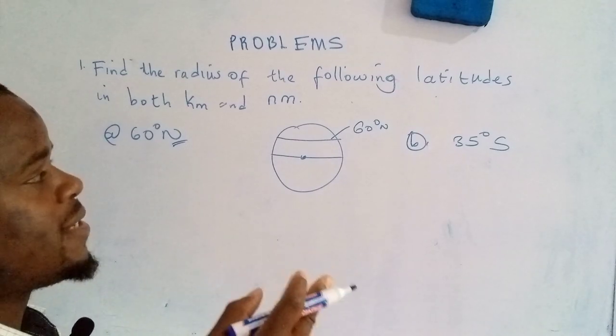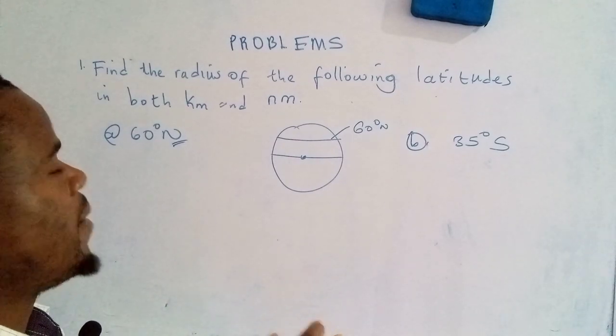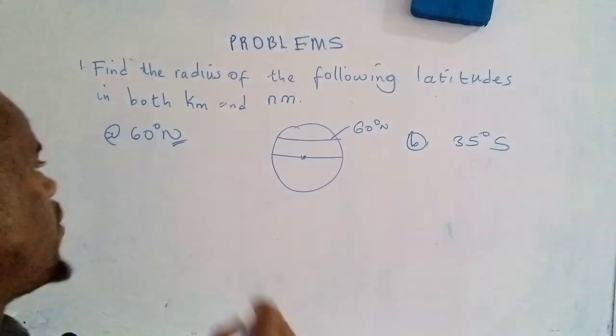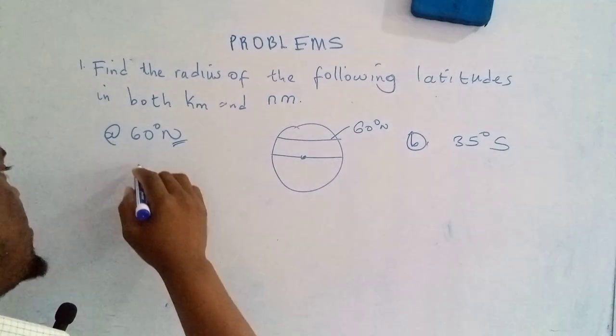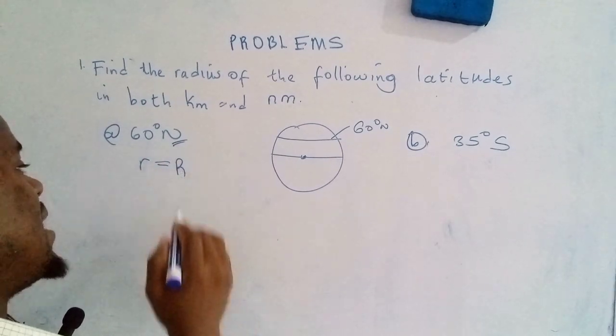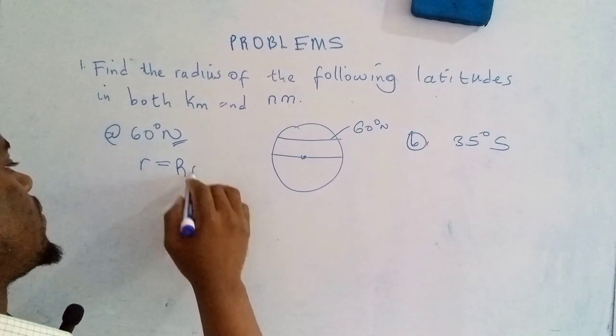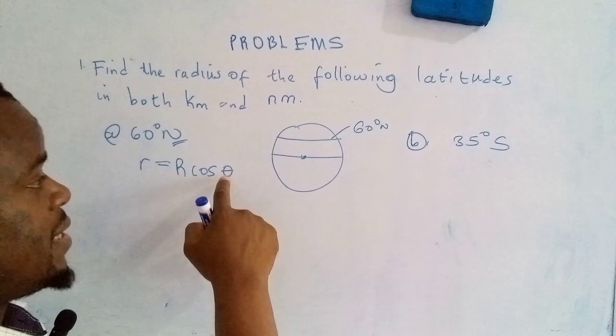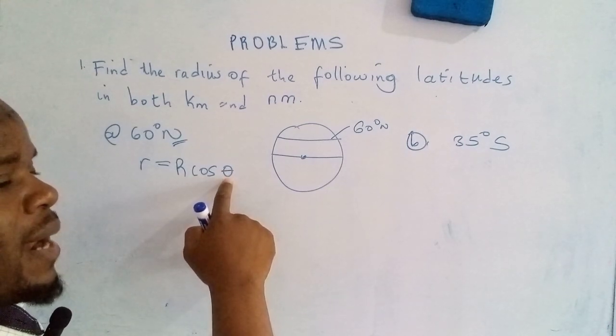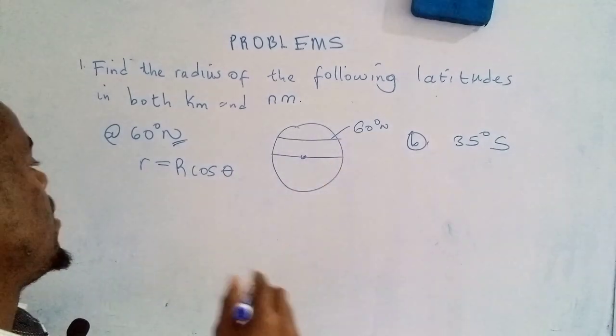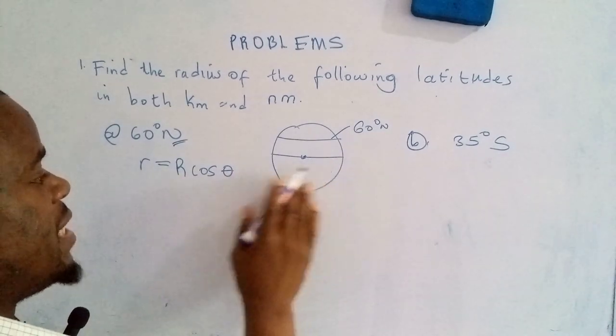And they say, determine its radius. So how would you determine its radius? You make use of the following equation. So radius of the latitude is given by the radius of the Earth cos theta. Theta denotes the actual latitude that we are looking at. So that's 60 degrees north. Let me collect data for you.